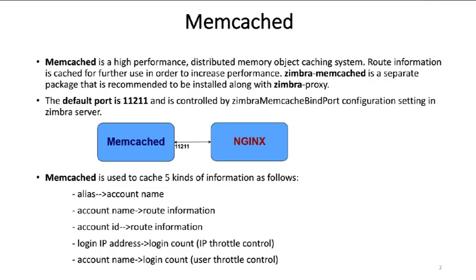Moving on to Memcached. Memcached is a high performance distributed memory object caching system. Route information is cached for further use in order to increase performance. Zimbra Memcached is a separate package recommended to be installed along with Zimbra Proxy. Though you do not need to install Memcached with multiple instances of Nginx, it is recommended to have Memcached installed with every instance of your Nginx in Zimbra.